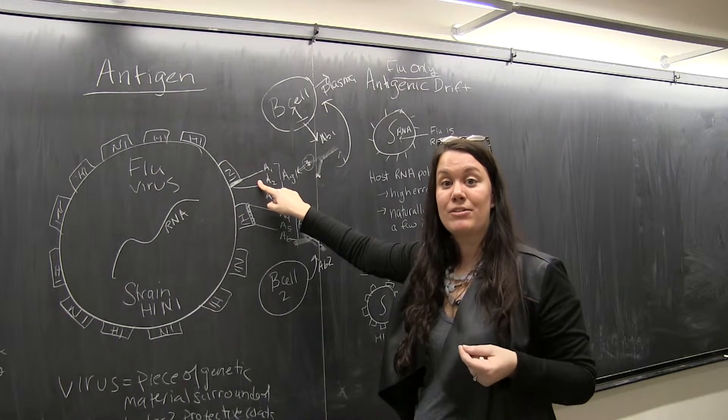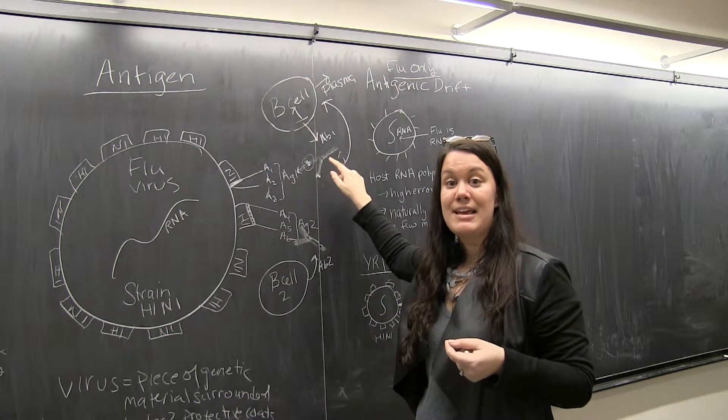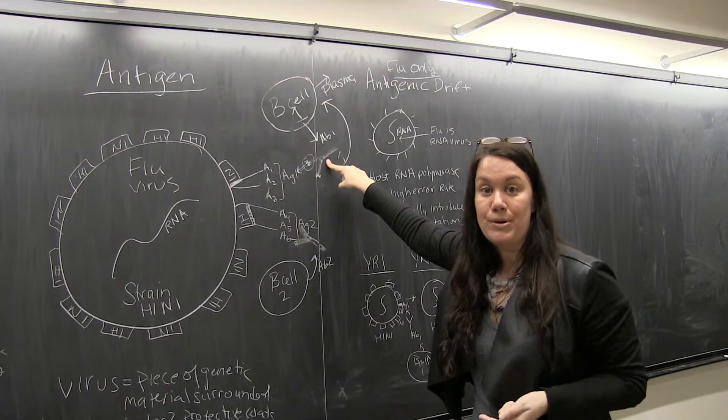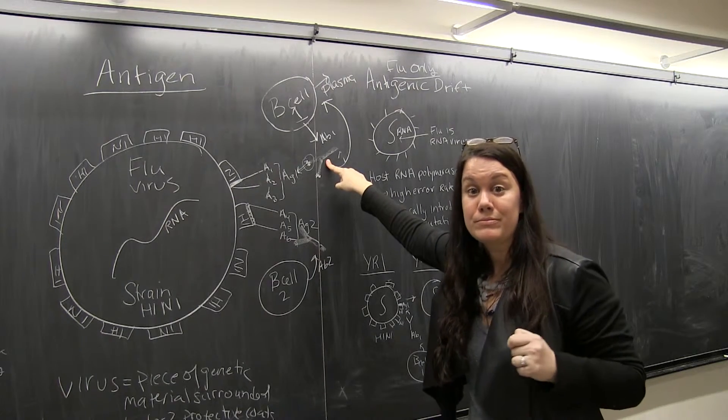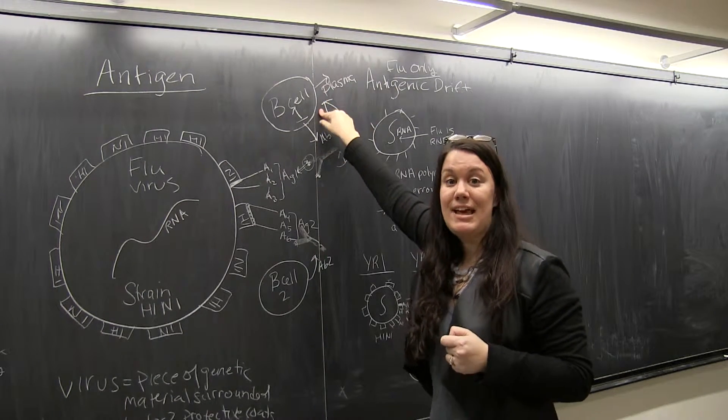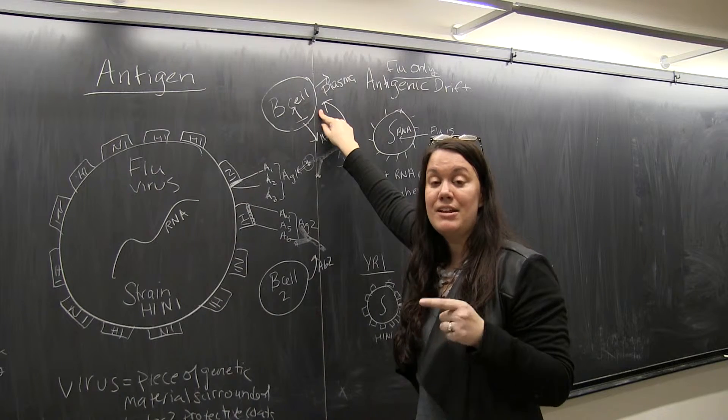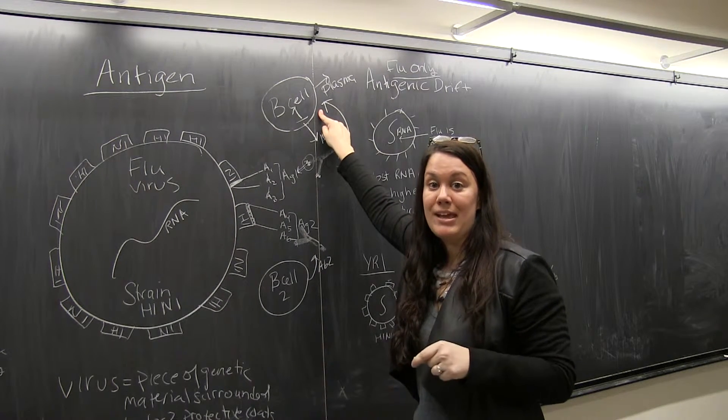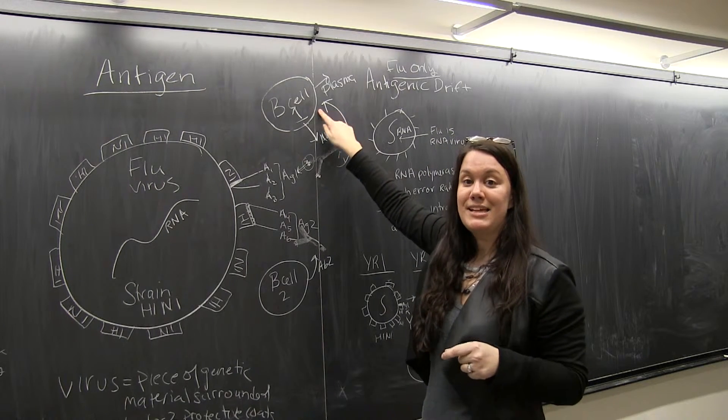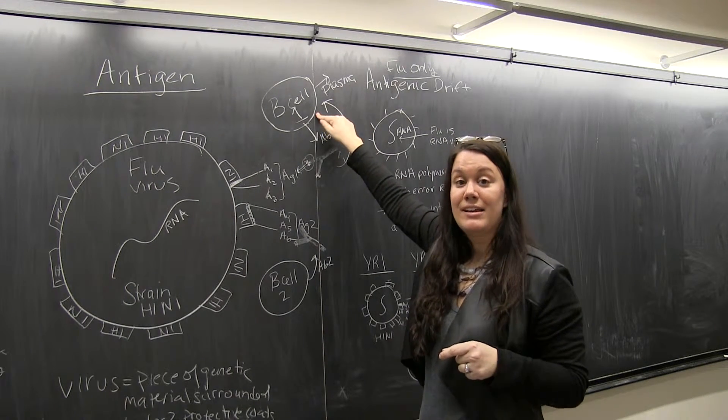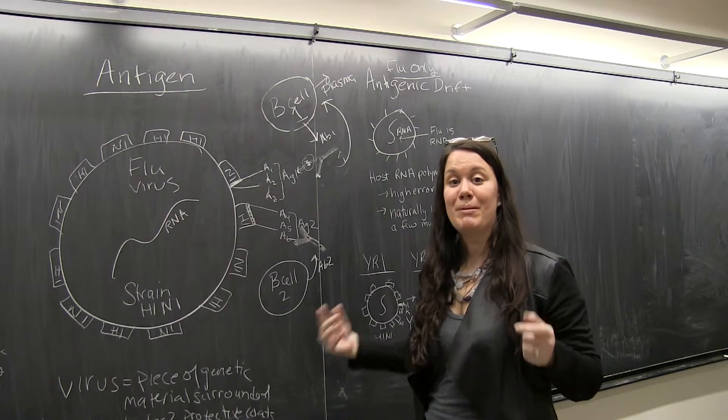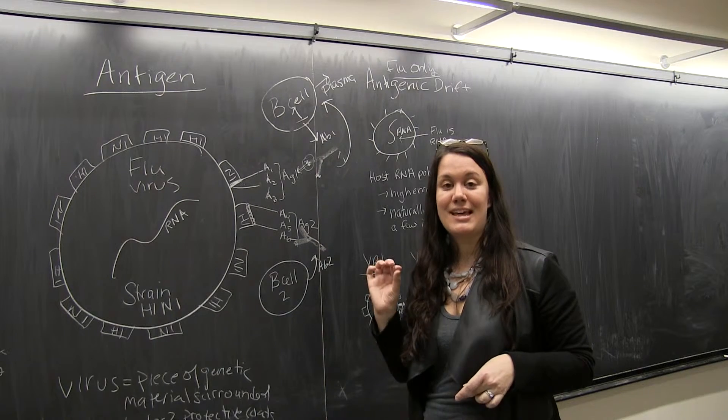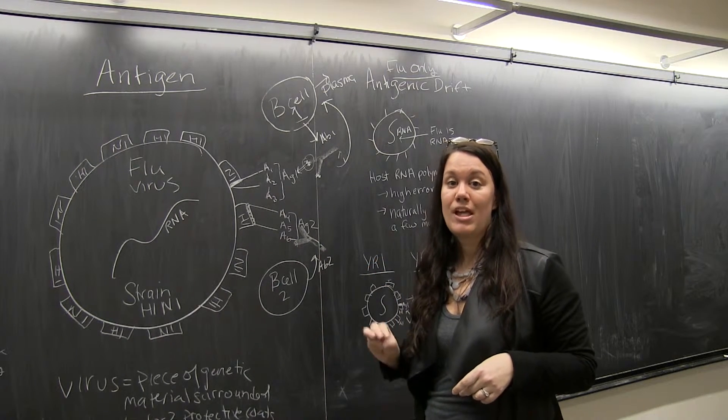And this does a couple different things. One, it marks that pathogen for destruction because the macrophage can recognize that other end, the constant region, and it will engulf it and destroy it. Two, it also is a signal back to that original B cell, B cell number one, to say hey, this is a good antibody to make, we should start making that. So the B cell will get signals to divide and also specialize into plasma cells and start just being an antibody one factory against that antigen number one.